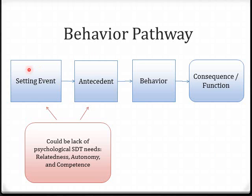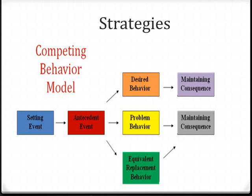ABA describes a specific behavior pathway. The setting event could be something that happened days, hours, or minutes before the behavior. The antecedent directly precedes the behavior, and the consequence is what happens after the behavior and is often the function. Not having a student's psychological needs filled could either be a setting event or an antecedent event in this framework — and this is kind of how SDT and ABA work really well together. ABA has two main strategies of behavior management: antecedent and setting event strategies focus on reducing the thirst for the functions of behavior by filling those needs early, which is very similar to SDT's psychological needs. The second strategy is teaching and reinforcing appropriate replacement behaviors so the student still has access to the function of the behavior — and this is where ABA can get really powerful and is sort of unique.